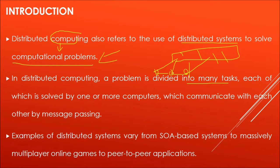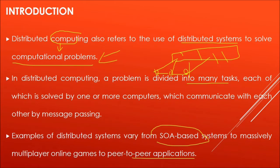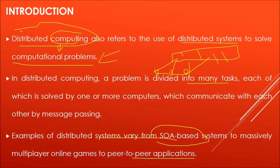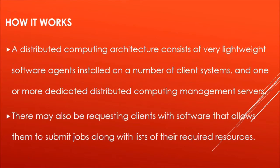Examples of distributed systems range from SOA — service-oriented architecture based systems — to massively multiplayer online games, to peer-to-peer applications. Distributed computing is often used in conjunction with, or considered a cousin of, grid computing. Grid computing has a different architecture and different way of how computing takes place, but they work together because the goal is the same.